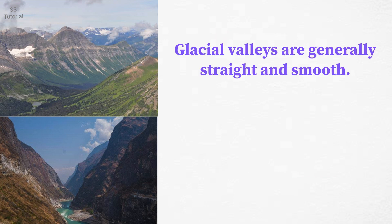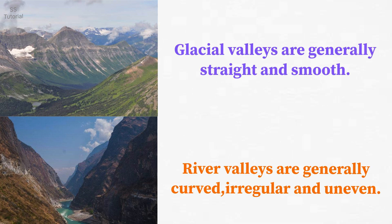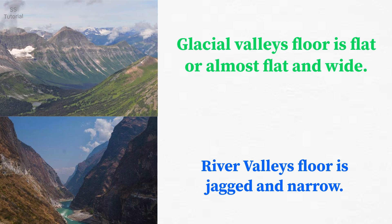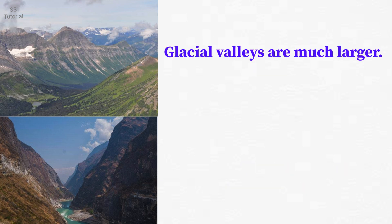Glacial valleys are usually straight and smooth, whereas river valleys are irregular, curved, and uneven. Glacial valley floors are flat or almost flat and wide, whereas river valley floors are jagged and narrow.